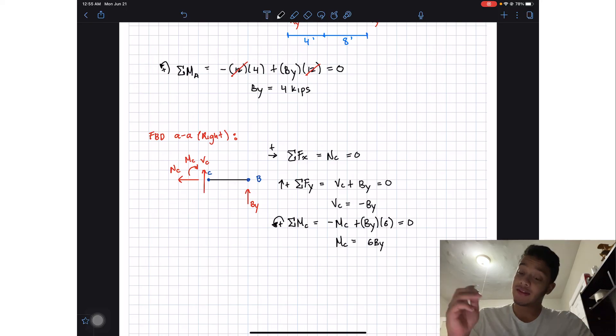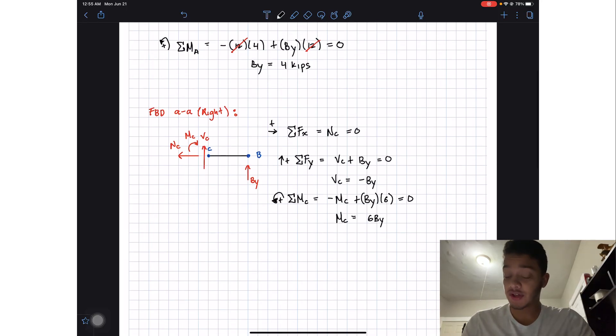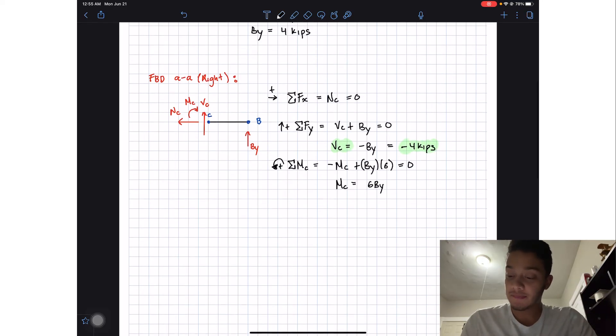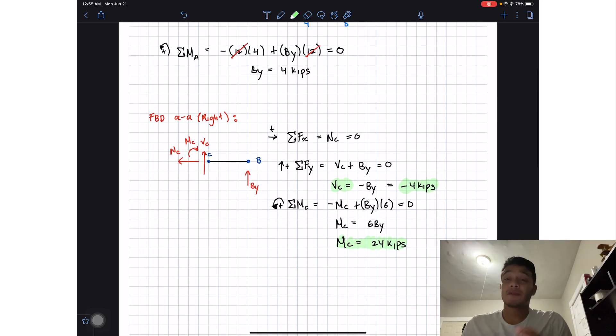So now that we know By, we can solve for the internal shear force so it will be equal to negative 4 kips. This is my internal shear force at point C. And then my moment at C will be equal to 6 times 4 that will give me 24 kilopound-feet. Thank you guys for watching, if you like the video please push the like button, subscribe, and I'll see you guys in the next one.